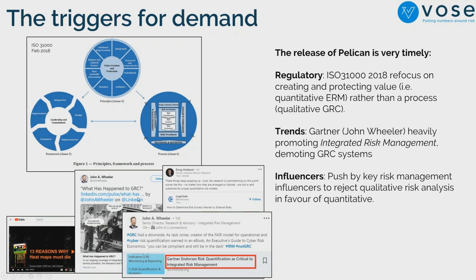People are now saying the whole GRC system was a big mistake, and they're talking about something they brand as 'integrated risk management' — which is essentially very similar to what we're producing in Pelican. You also see influencers like Alexei Sidorenko on LinkedIn and Doug Hubbard, who has been arguing for years that quantitative risk analysis is achievable. His 'How to Measure Anything' books are very revealing, and I thoroughly encourage you to read them.